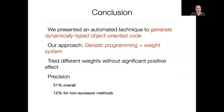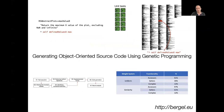In conclusion, we presented an automatic technique to generate dynamically typed object-oriented code using genetic programming with weighting mechanisms. We tried different weights without a significant positive effect. Overall, we have a precision of 51%, and 12% for non-accessor methods that we qualify as complex. Our approach generates methods with exactly one statement by putting a hole in an application and using the genetic algorithm to fill it, guided by the number of passing tests, following a seven-step methodology. Thank you very much.